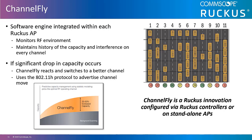When initially deployed, in the first 30 to 60 minutes there will be more frequent channel changes as Channel Fly learns the environment. Once an AP has learned about the environment and which channels are most likely to offer the best throughput potential, channel changes will occur less frequently unless a large measured drop in throughput occurs. Channel Fly can react to large measured drops in throughput capacity in as little as 15 seconds.